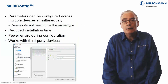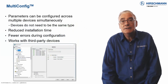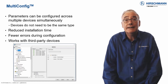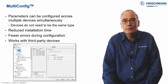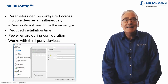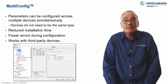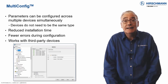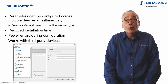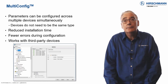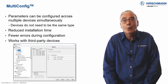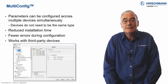When configuring a network, parameters on the switches often need to be configured to the same value. It is possible to configure each switch individually, using the built-in web interface or a command line. But it's far quicker to configure all the switches simultaneously.